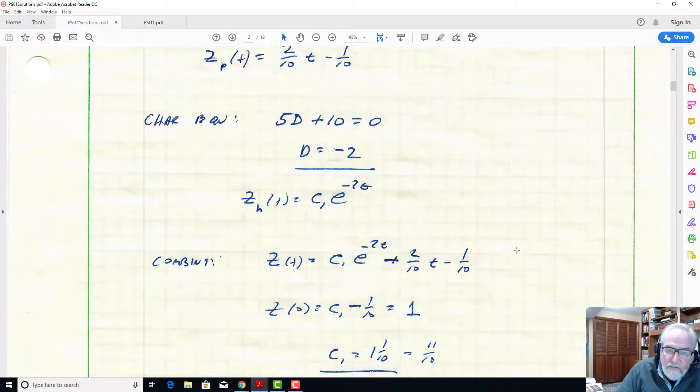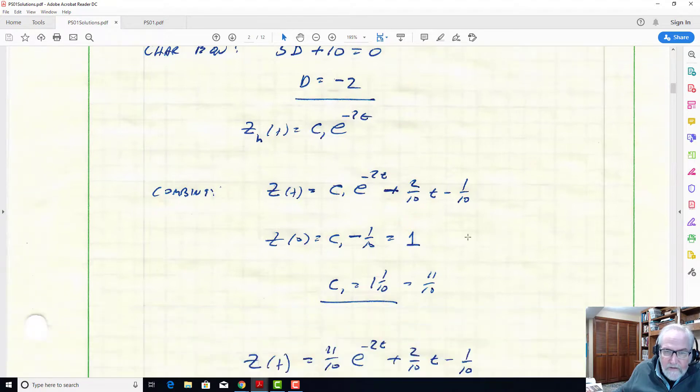Now the next step, the third step we have, is combine the homogeneous and particular solution. So the total solution z of t is c1*e to the minus 2t plus 2/10*t minus 1/10. We apply the initial condition and evaluate that total solution z of t at time t equals zero. We're only left with c1 and 1/10. The 2/10 drops out, the exponential goes to 1. c1 minus 1/10 equals 1, which translates to c1 equals 11/10.